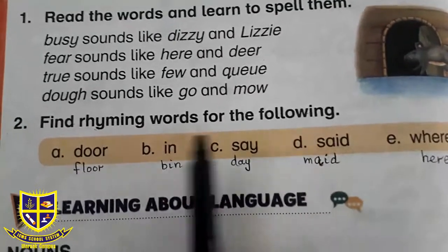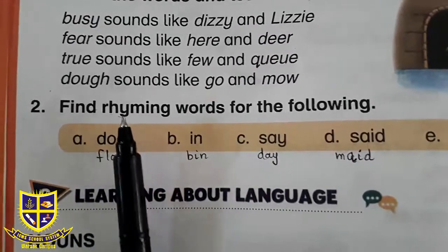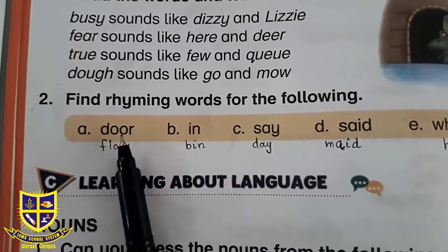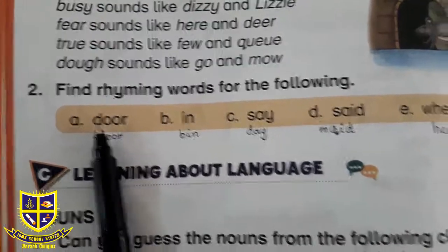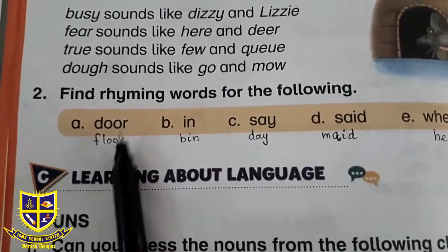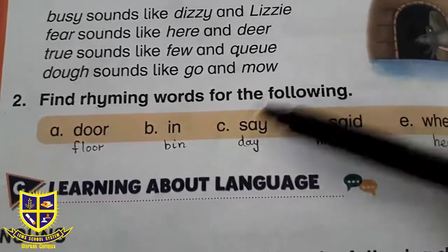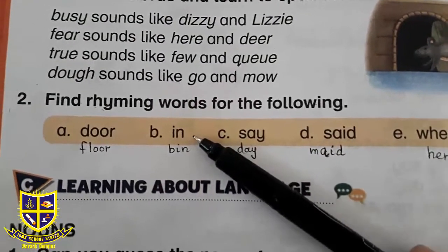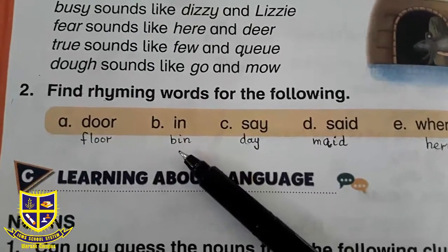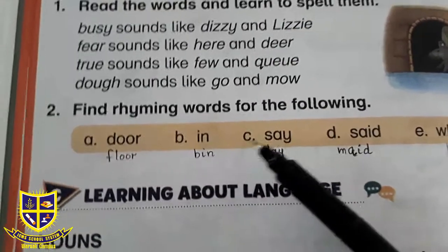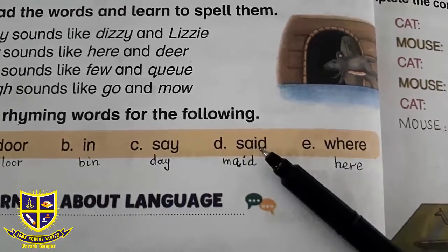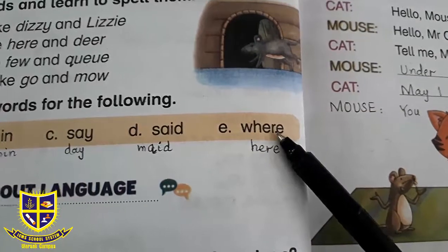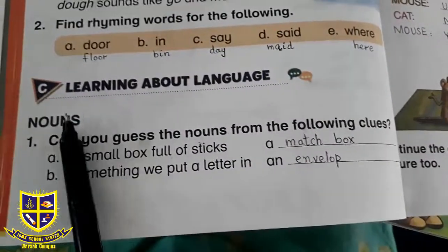Dear students, rhyming کا مطلب ہے ہم آواز الفاظ — یعنی دو مختلف words ہوتے ہیں لیکن ان کی آواز ایک جیسی نکلتی ہو pronounce ہونے میں۔ جیسے 'door' کے ساتھ 'floor' — یہ ایک جیسے rhyming words ہو گئے۔ 'In' کے ساتھ 'bin' یا 'thin' لکھ سکتے ہیں — کوئی بھی word جو 'in' کے ساتھ similar sound رکھتا ہو۔ 'Say' کے ساتھ 'day'، اور 'where' کے ساتھ 'here' — یہ وہ rhyming words تھے جن کی sounds ایک جیسی تھیں۔